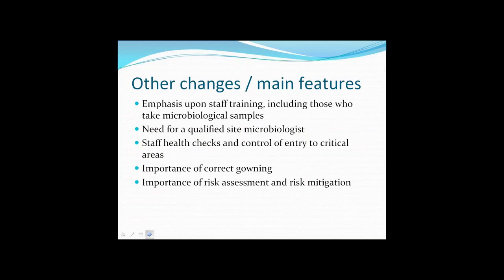Other things in the USP chapter that are perhaps more minor but equally important: there is a strong emphasis upon staff training, particularly those who take microbiological samples who need microbiological awareness training. If this activity is delegated to production staff, the quality department should make sure those staff have a good level of training. There is also a stated need for a qualified site microbiologist to be based on every site, mention of staff health checks, very strict control of entry into critical areas, an emphasis on the importance of correct gowning, and the use of risk assessment and methods of risk mitigation.